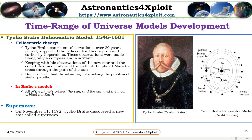Tycho Brahe heliocentric model: Tycho Brahe consisted of observations over a period of 20 years, supporting the heliocentric theory proposed earlier by Copernicus. These observations were made using only a compass and a system. Keeping with its observations of the new star and the comet, its model aligned a part of the planet mass to cross through the part of the sun. In Brahe's model, all of the planets orbit the sun, and the sun and the moon orbit the heart. On November 11, 1572, Tycho Brahe discovered a new star called supernova.